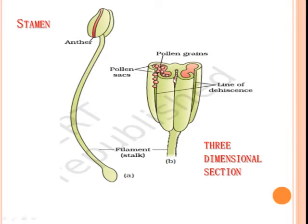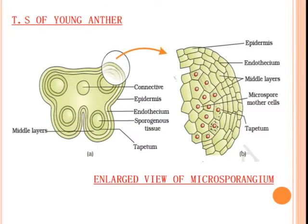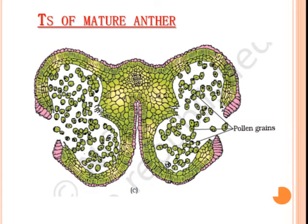These pollen sacs enclose a mass of cells called sporoginous cells, or microsporocytes. The microsporocytes undergo a few mitotic divisions to increase their number and give rise to microspore mother cells — in short, MMC. These are also called PMC, pollen mother cells.